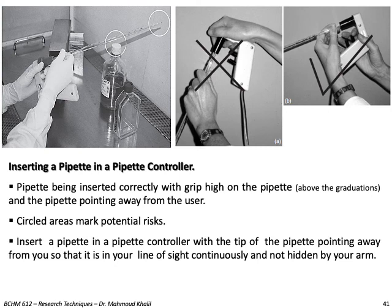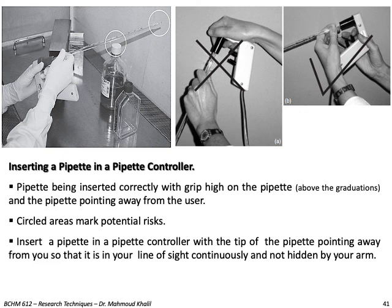Here you can see how to insert a pipette into a pipette controller. The pipette should be inserted correctly, with the grip high on the pipette above the graduation, and the pipette tip pointing away from the user, as shown in figure B. The circled area marks the potential risk in the left figure. Insert the pipette with the tip pointing away from you so it remains in your line of sight continuously and is not hidden by your arms. The figures show the correct and wrong ways of inserting a pipette into a controller.